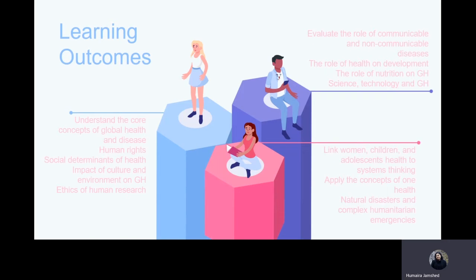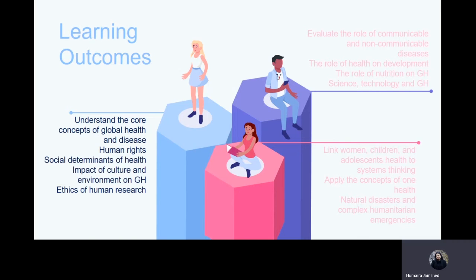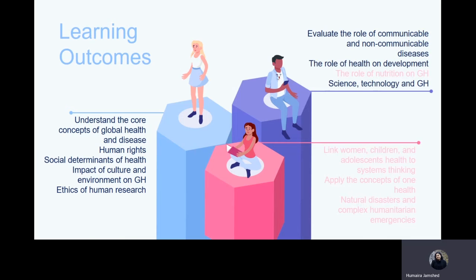Through this course you will understand the core concepts of global health and disease, human rights, ethics of human research, social determinants of health, and the impact of culture and environment on global health. To evaluate the role of communicable and non-communicable diseases, we will talk about science, technology and global health, the role of health on development, and the role of nutrition on global health.